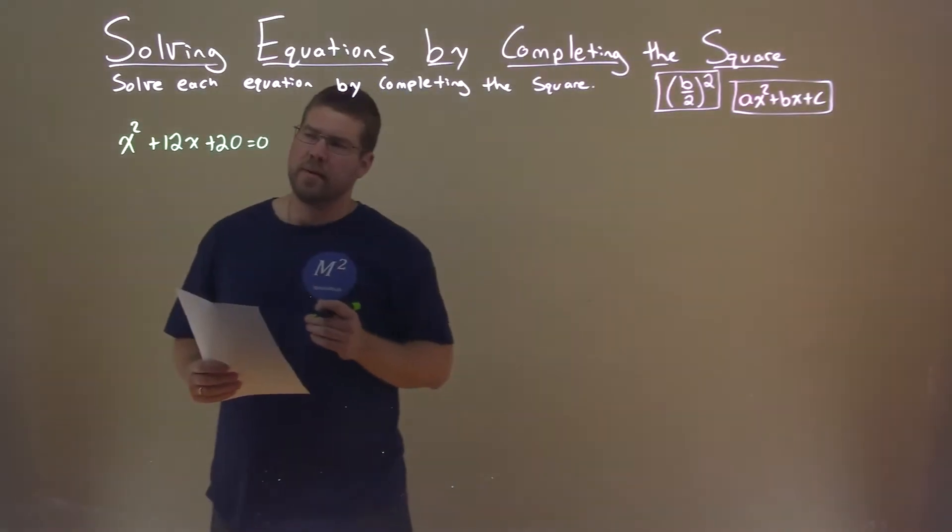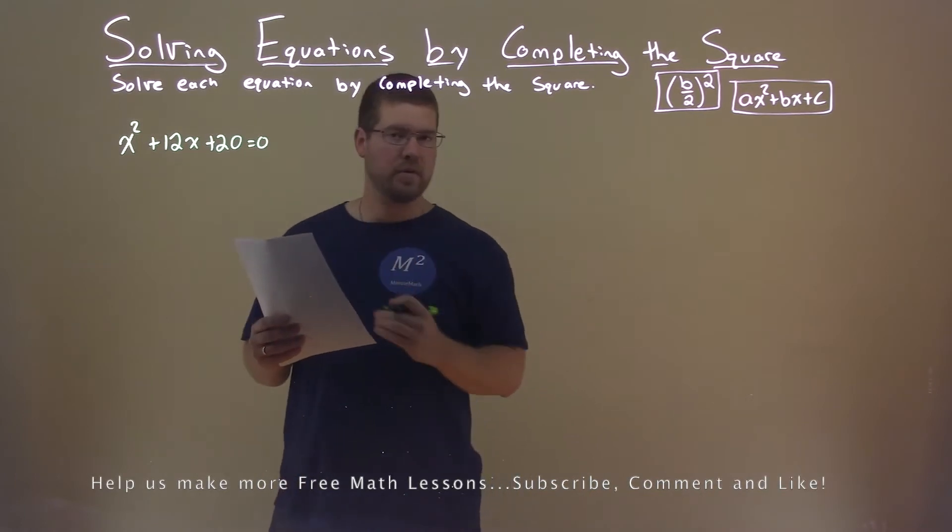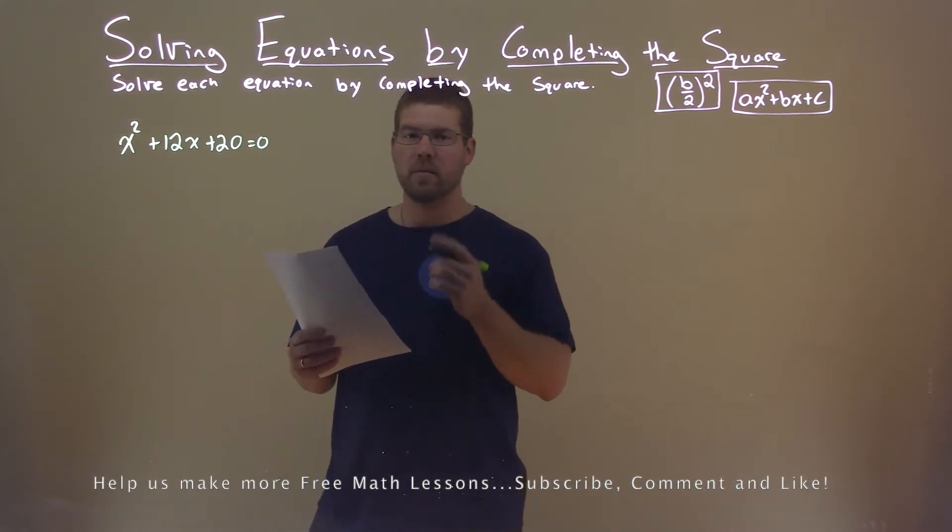We're given this problem right here: x squared plus 12x plus 20 equals 0, and we want to solve this by completing the square.